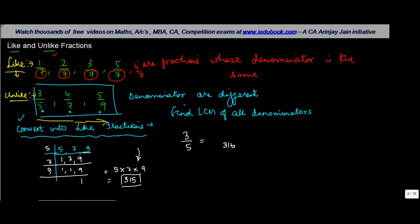Now how do you do this into a like fraction? So to do the like fraction, I have to have 3 upon 5 is equal to some number where the denominator is 315. Similarly for 4 upon 7 and for 5 by 9.